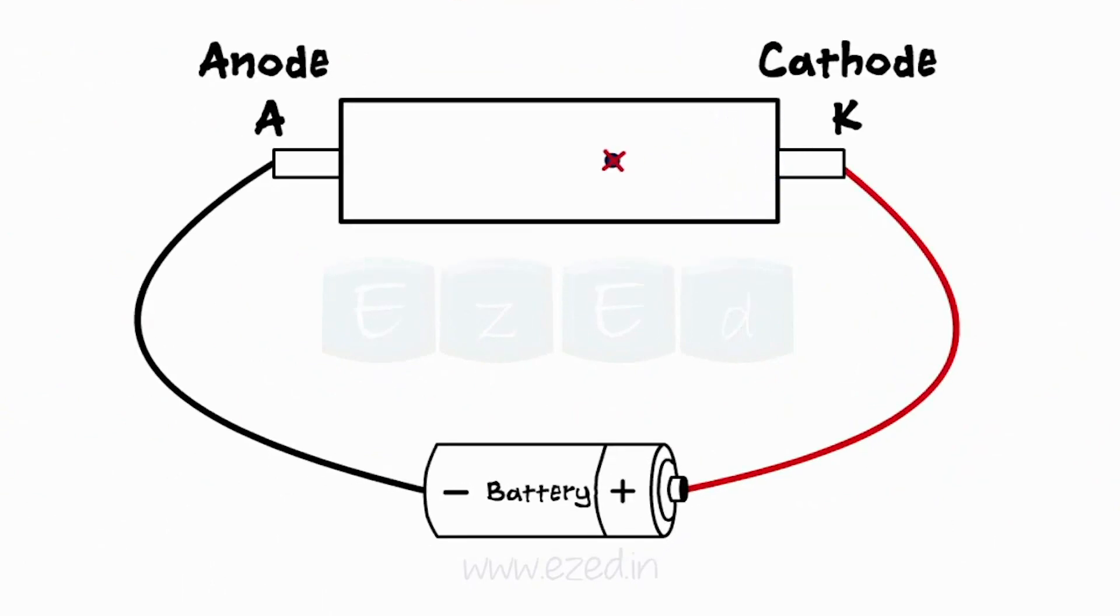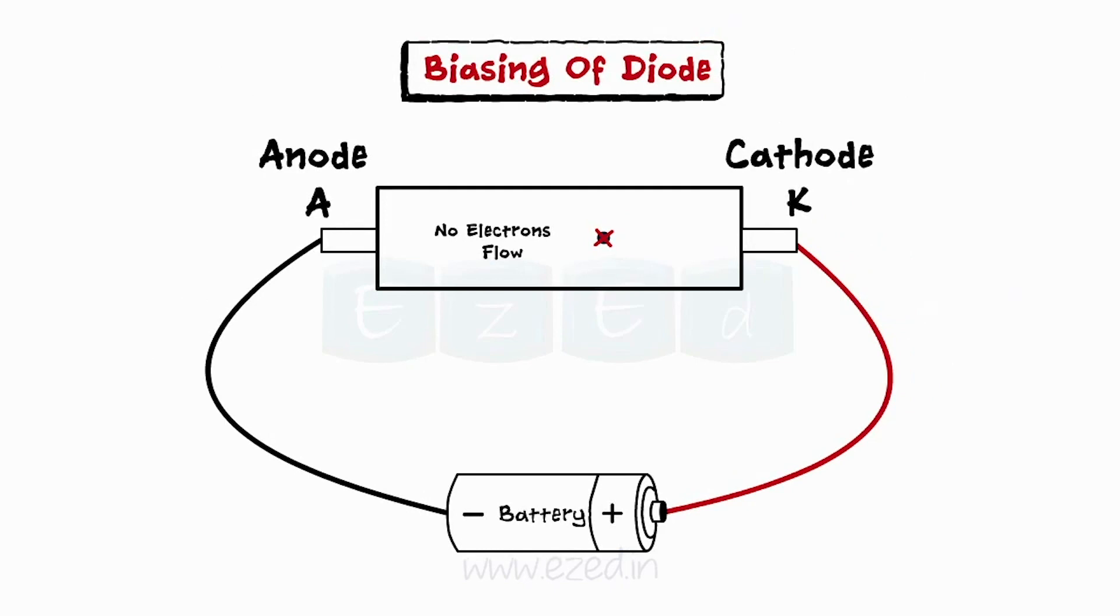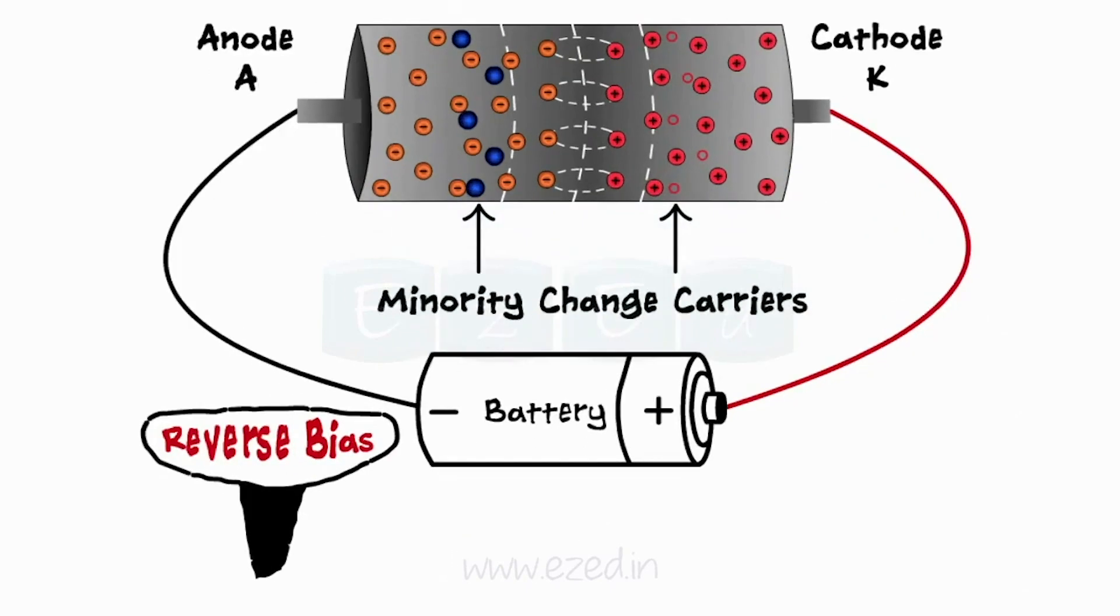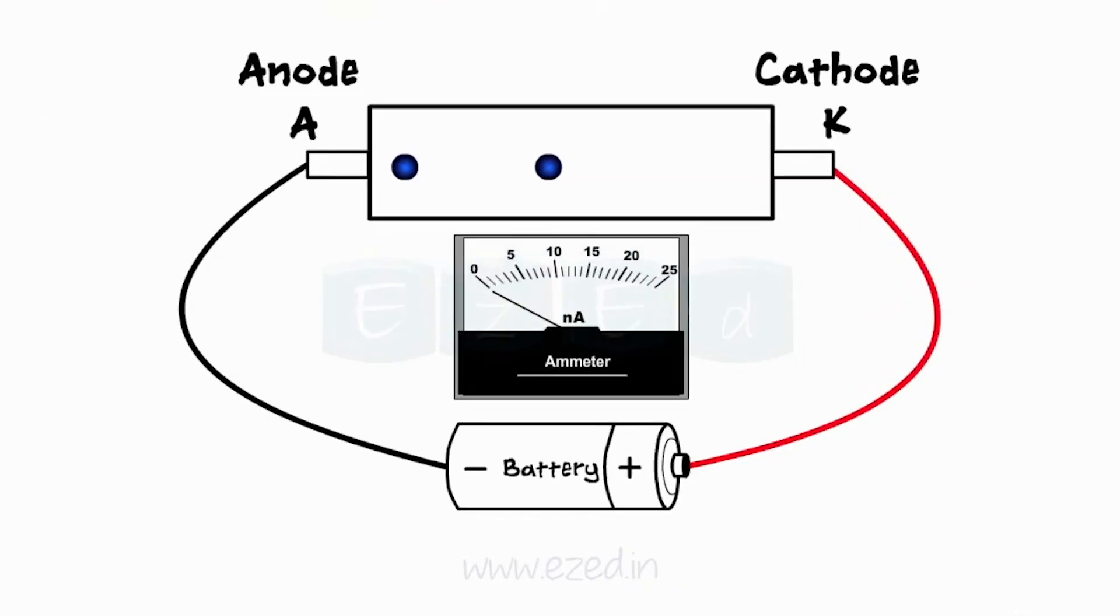This mode is called reverse bias mode. But there are some minority charge carriers always present in both regions. Hence, in the reverse bias case, minority charge carriers cross the depletion region setting up current flow. But the magnitude of this current is very low, in the nanoampere range.